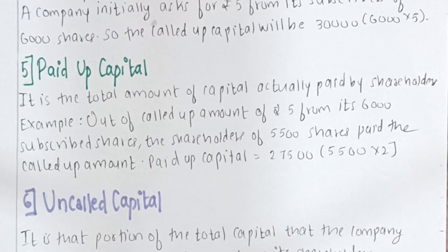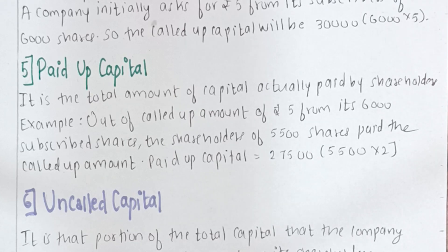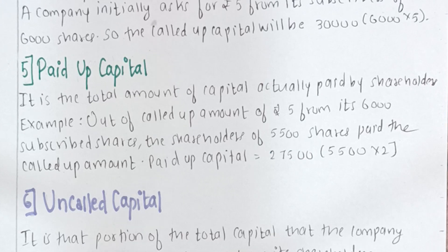Moving on to paid up capital — it is the portion of called up capital that is actually paid by the shareholders. The shareholder may pay only part of the called up amount; any unpaid portion is referred to as reserved capital. For example, out of a called up amount of rupees 5 from 6,000 subscribed shares, if shareholders of 5,500 shares paid the called up amount, the paid up capital will be rupees 27,500 (5,500 × 5).